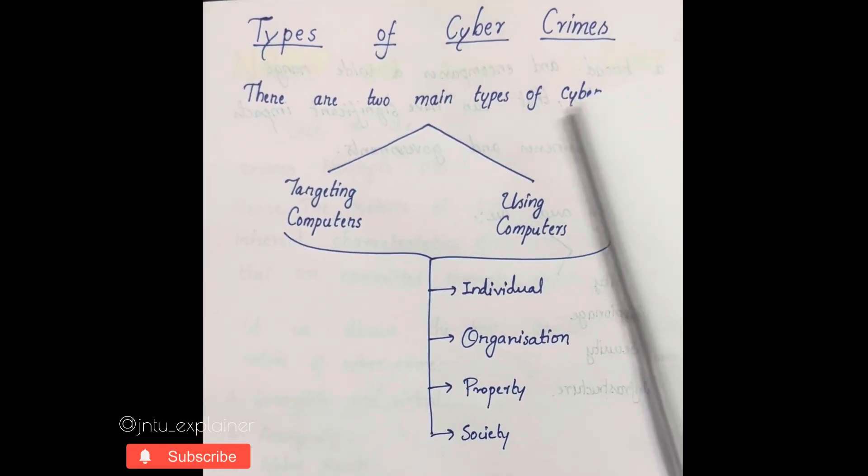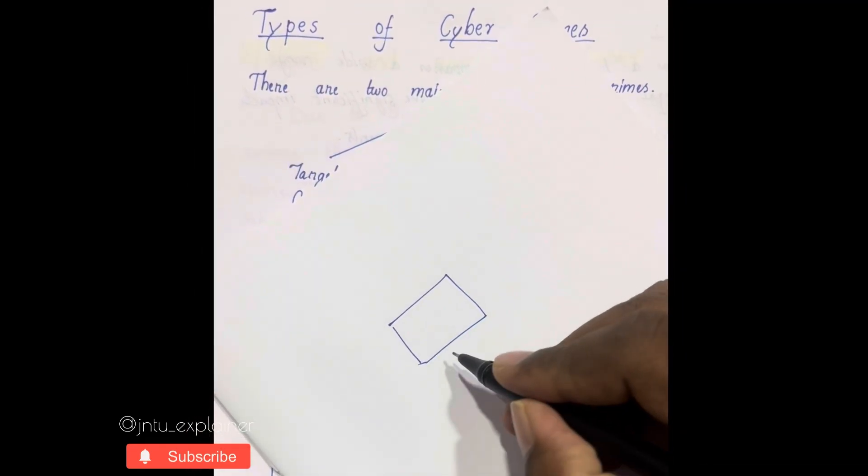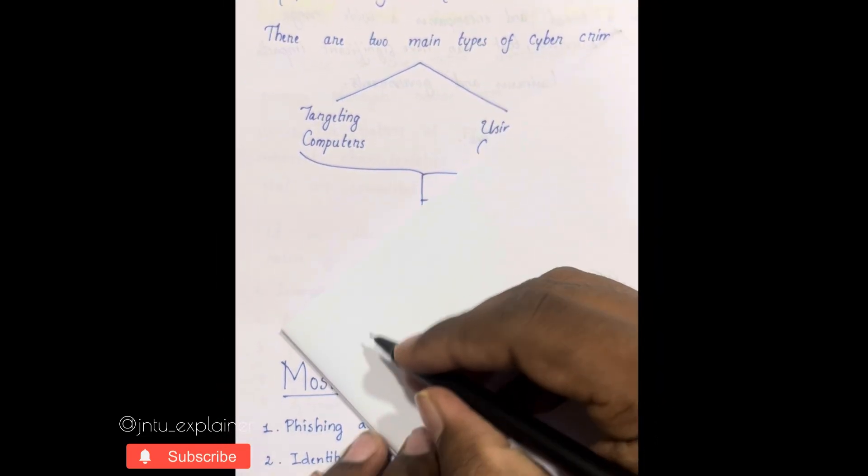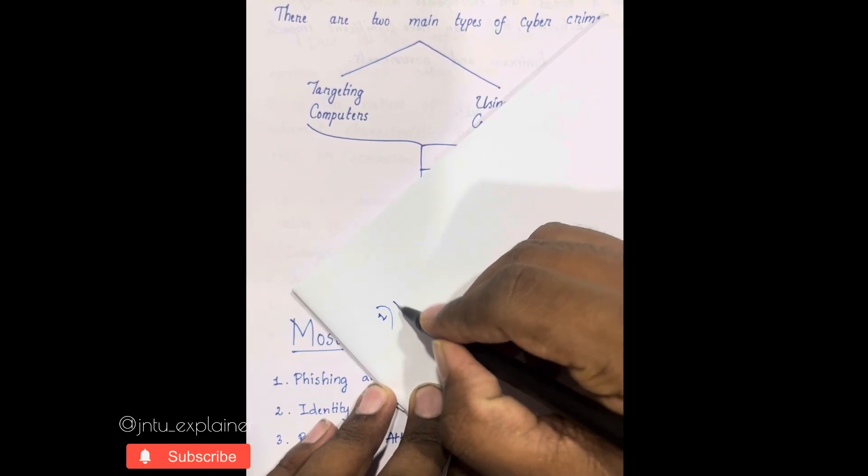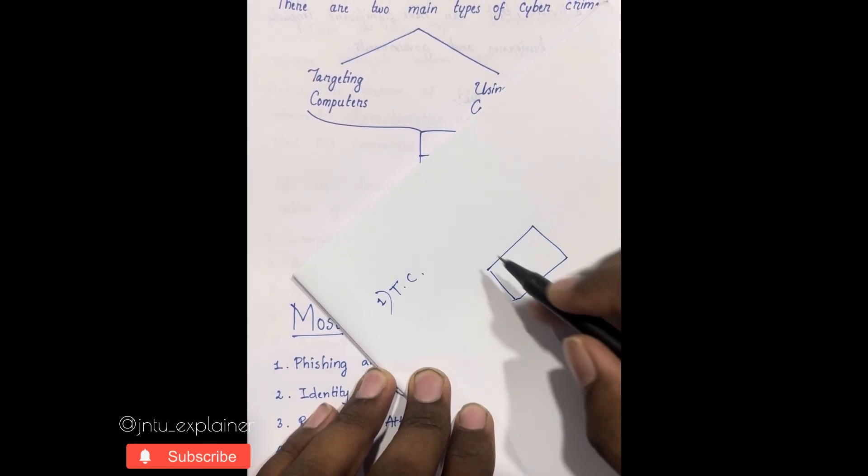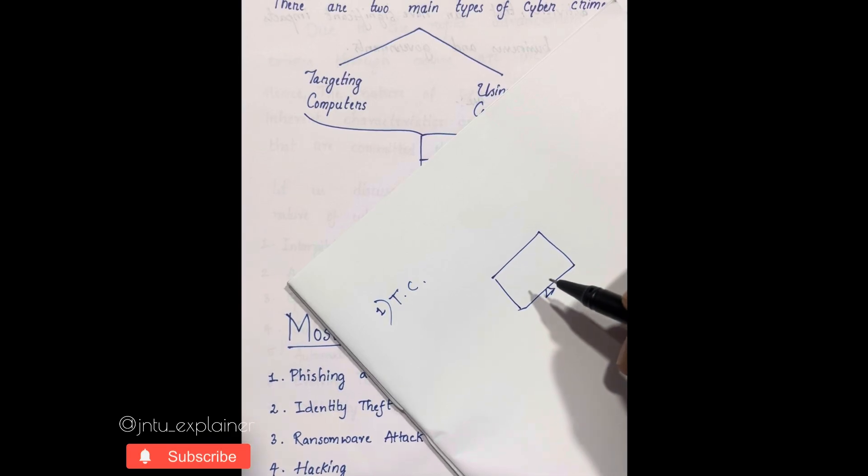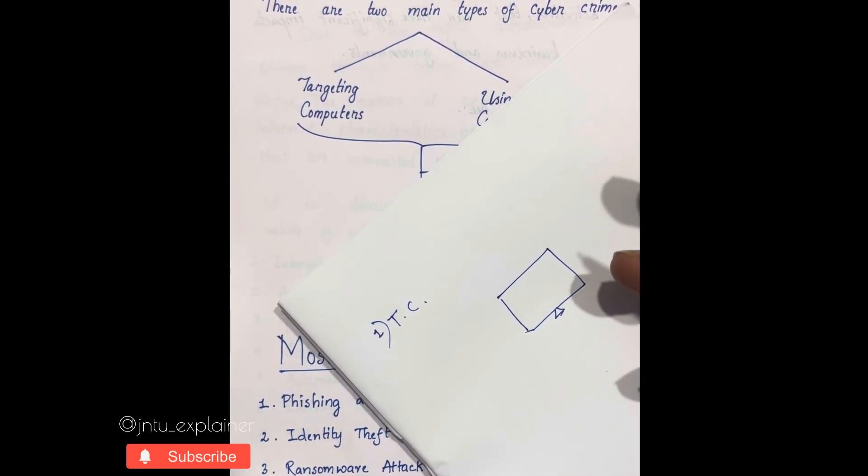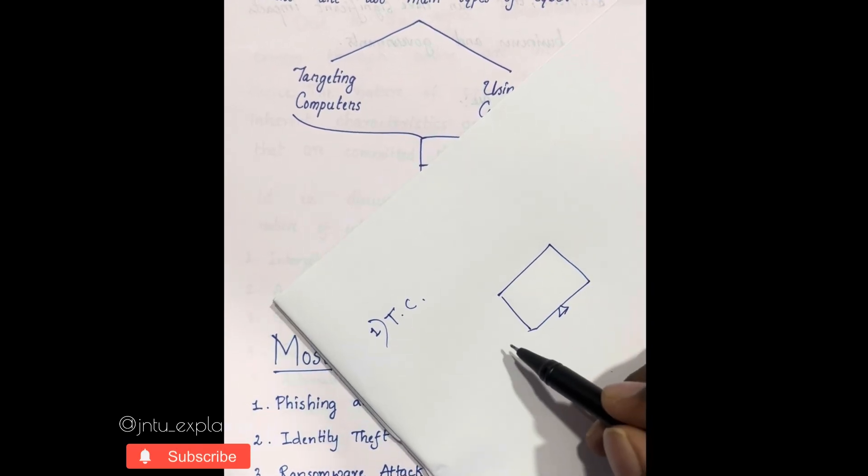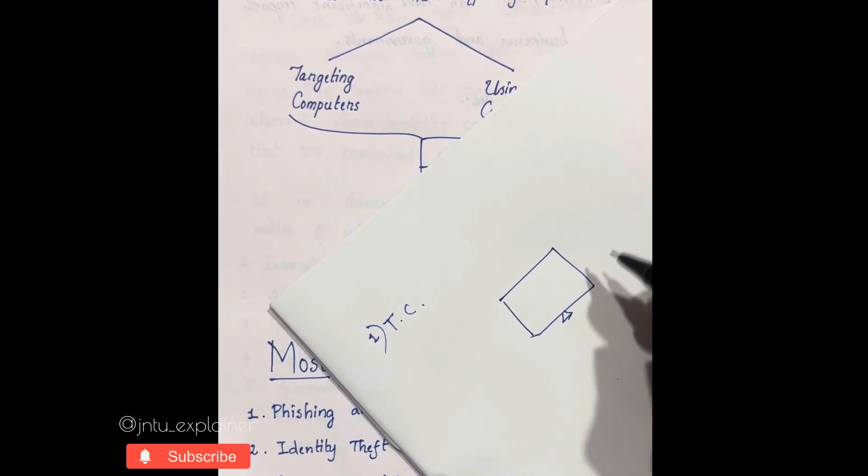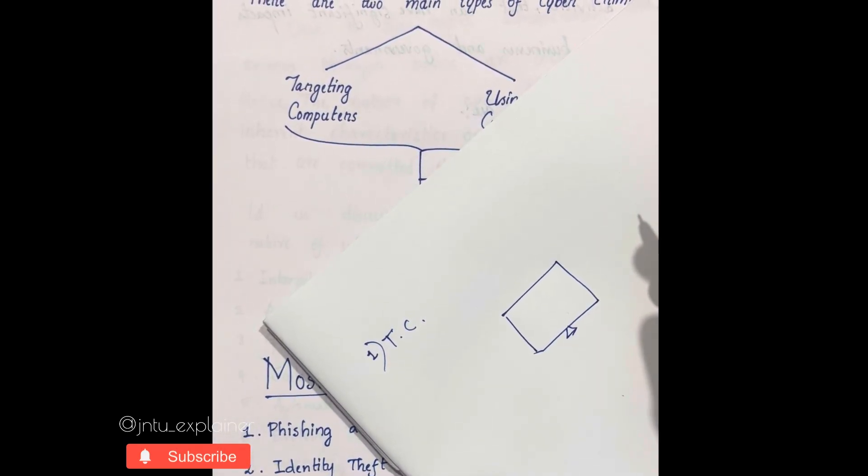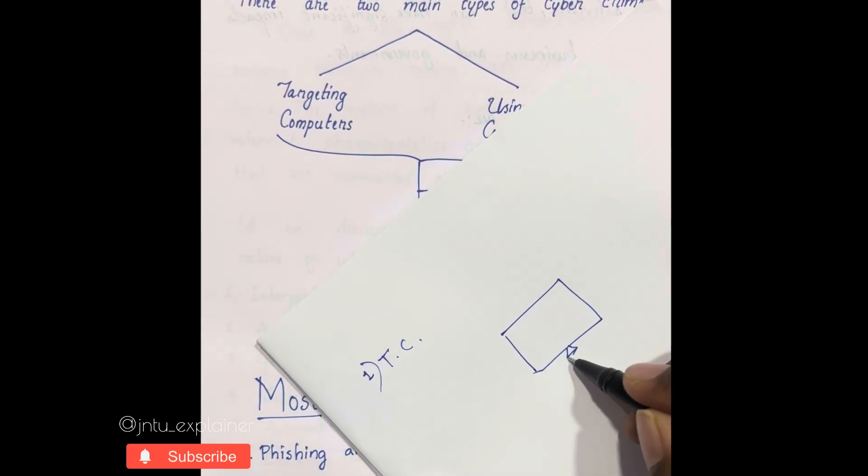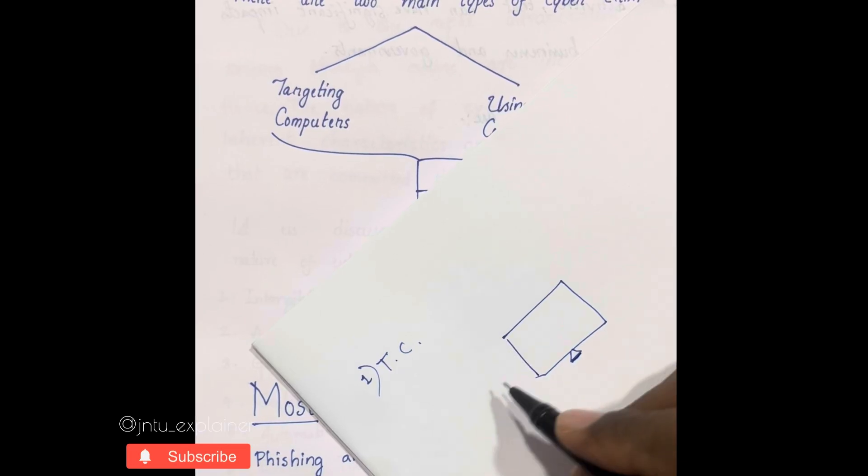This is basically a computer. Let's learn what targeting computers means. Here they target the computer from which they want the data or any kind of stuff. It will be in many types: viruses, malware, data breaching, etc. Here they take a computer and try to insert